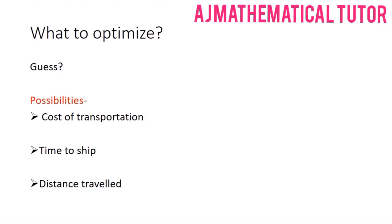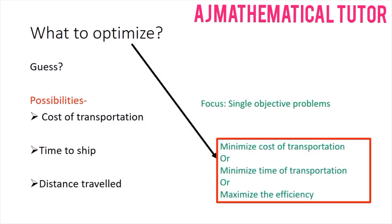Our focus is to work on single objective problems — we cannot have more than one objective satisfied at the same time. Therefore we must select one. Usually it is the minimization of the cost of transportation, or minimization of the time of transportation, and in certain examples it can also be the maximization of efficiency.